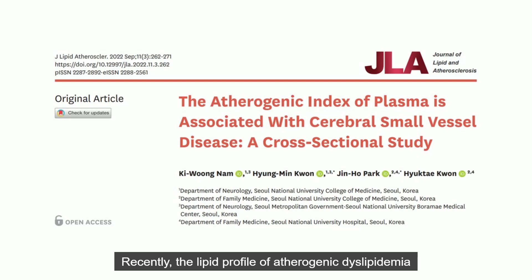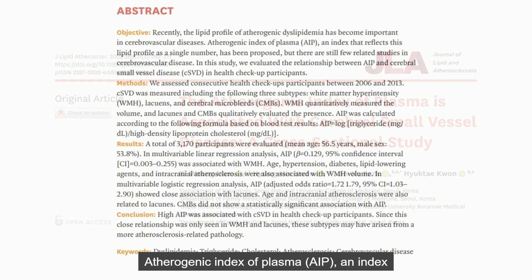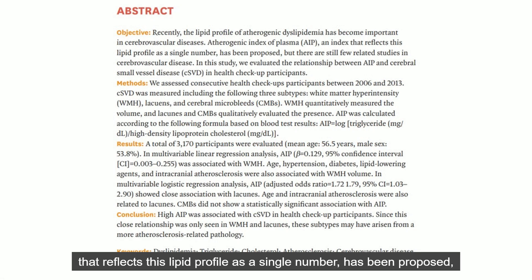Recently, the lipid profile of atherogenic dyslipidemia has become important in cerebrovascular diseases. The atherogenic index of plasma (AIP), an index that reflects this lipid profile as a single number, has been proposed, but there are still few related studies in cerebrovascular disease.